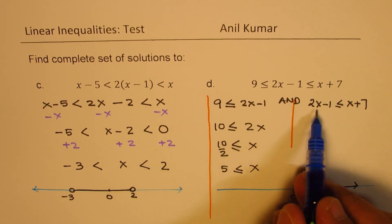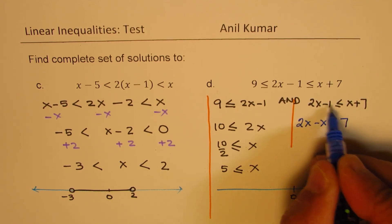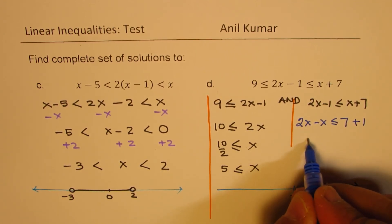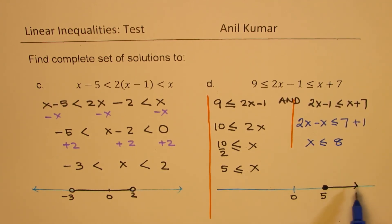On this side we have 2x. Bring x this side. So we get 2x minus x is less than equals to 7. Take 1 there. So there is x is less than equal to 7 plus 1 is 8. So here we get a solution which says from 8 to this side is the solution. From 8 where 8 is included.